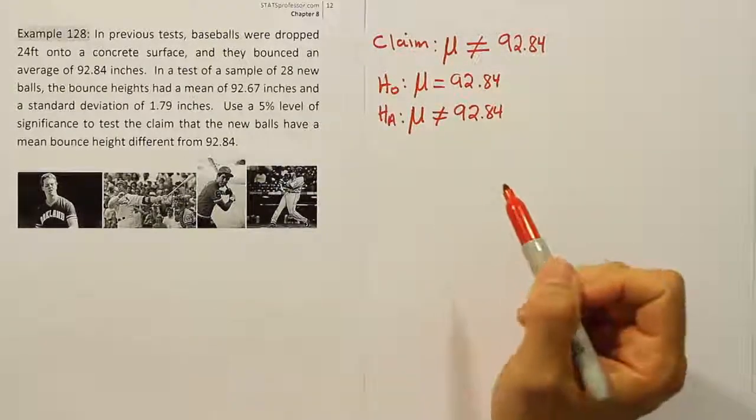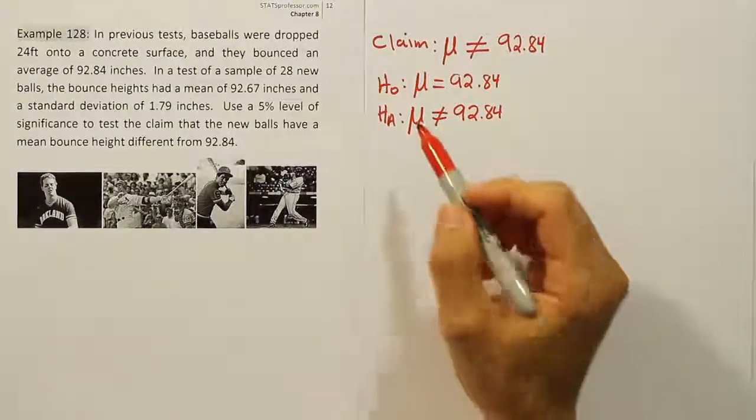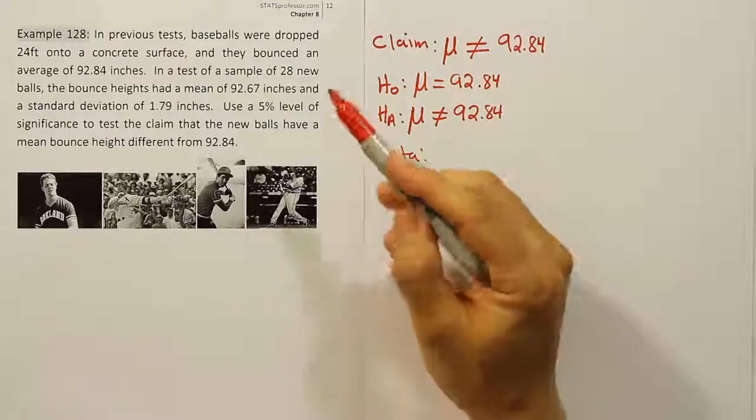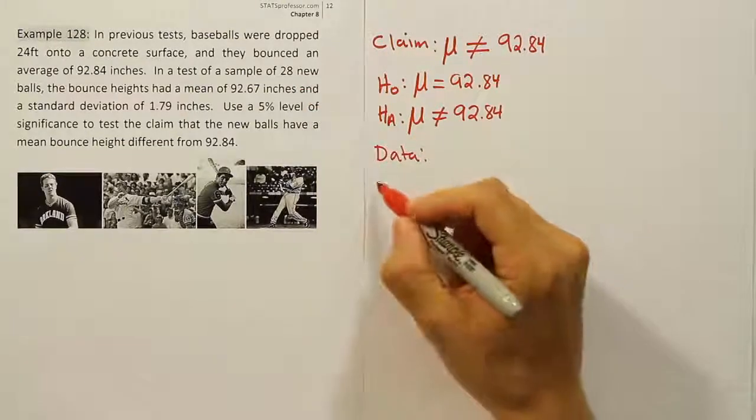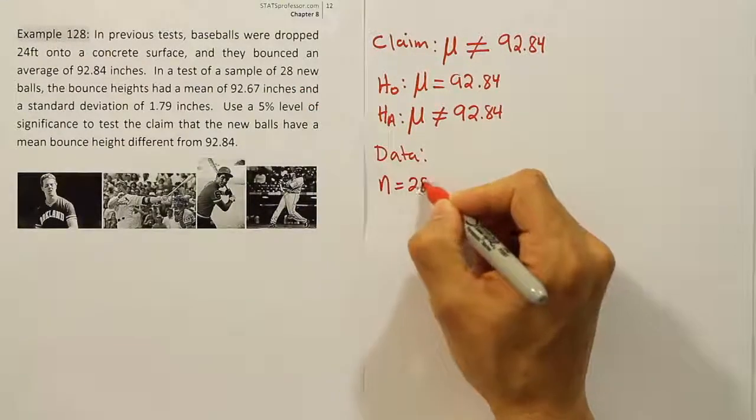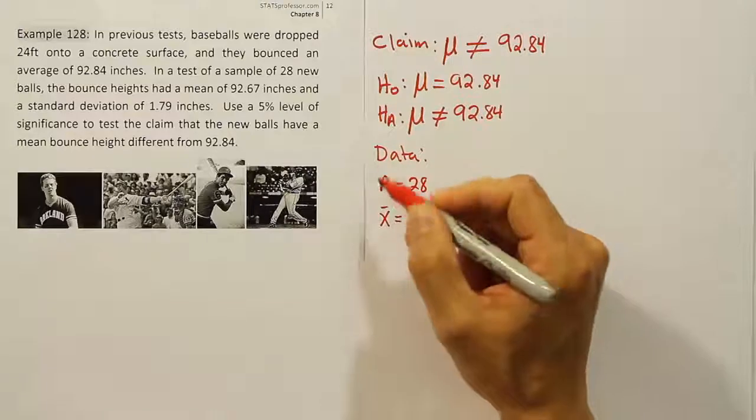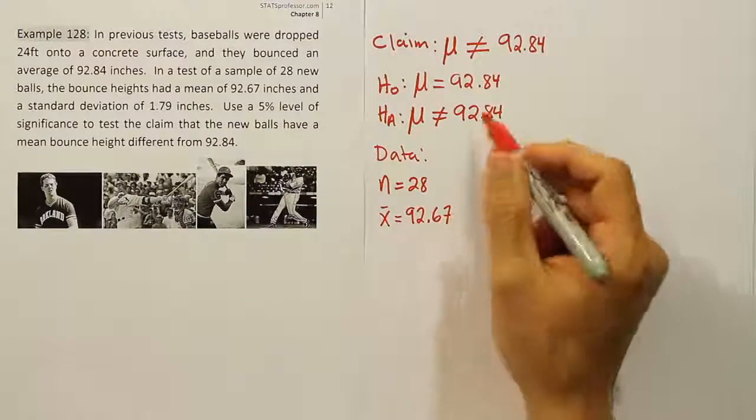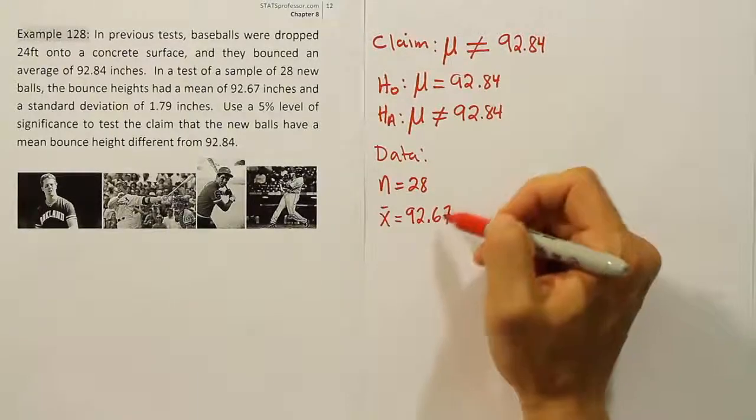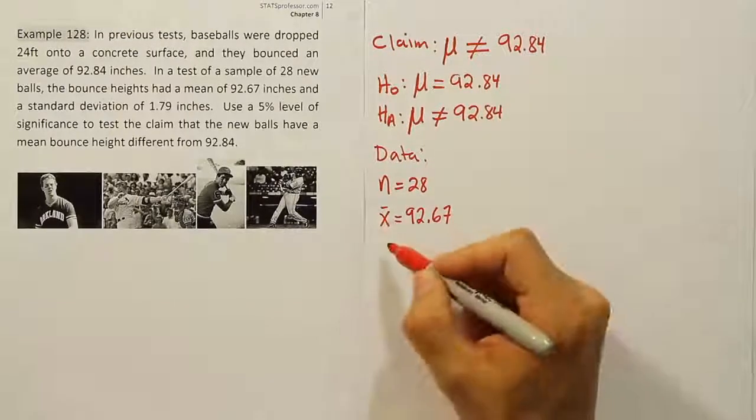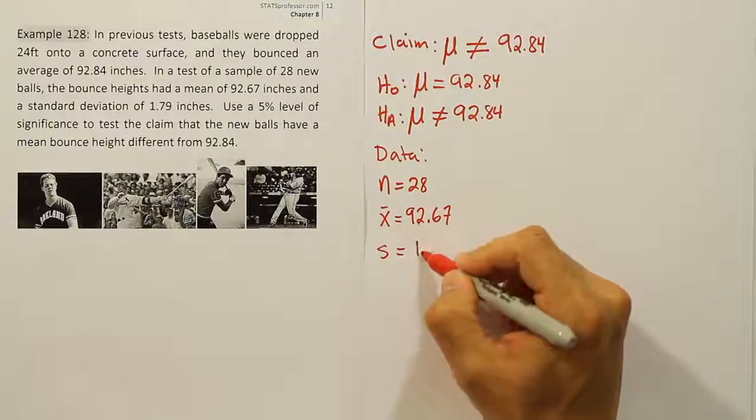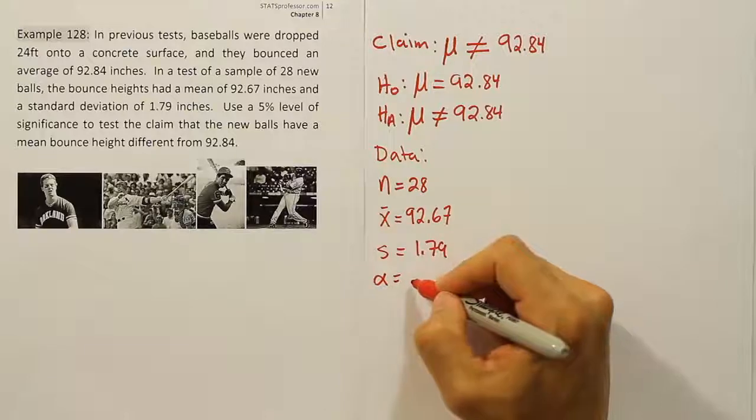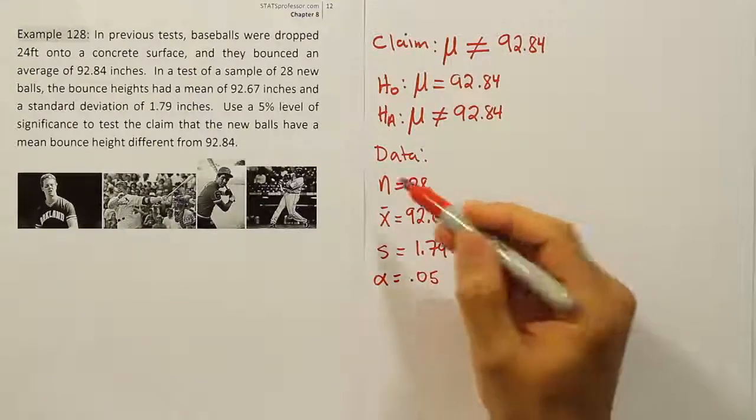Now from there, what we want to do is go ahead and get our data from the problem itself. It says in a sample of 28 new balls, so n = 28. The sample mean had a value of x̄ = 92.67. That's pretty close to the 92.84, and in fact it's even under. The standard deviation here is s = 1.79 inches. And lastly, the alpha is given as 5%, that's α = 0.05. So there's our data.